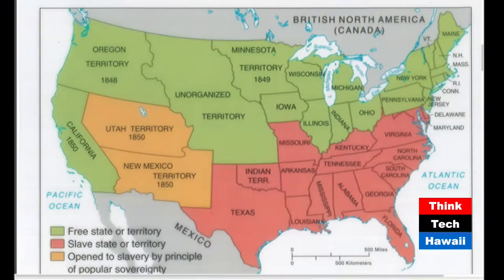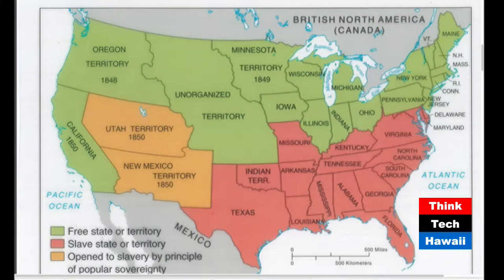The map shows this compromise worked out in Congress: California was going to come in free; Utah and New Mexico territory were coming in with popular sovereignty, where the people of those territories decide on slavery; there was the abolition of the slave trade in Washington, D.C.; and probably most importantly, a new fugitive slave law.